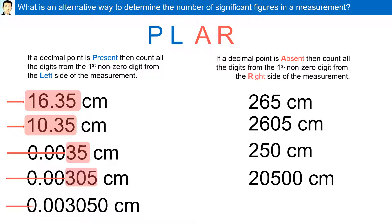Another number with a decimal point present: we come from the left — 4 significant figures. For numbers on the right side where no decimal point is present, we come from the right — absent, right. Some examples yield 3 significant figures, others 4 significant figures. For 250, there are no decimal points, so we come from the right side; the first non-zero digit is 5 — 2 significant figures.